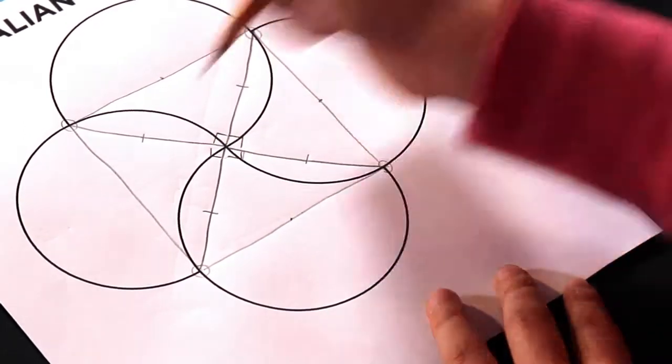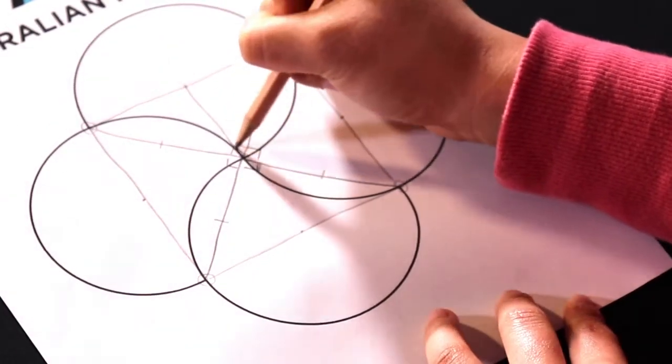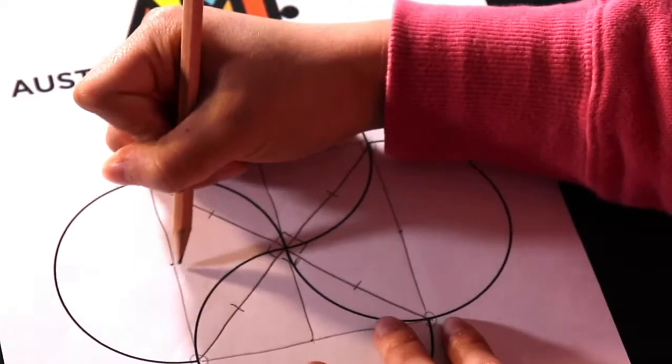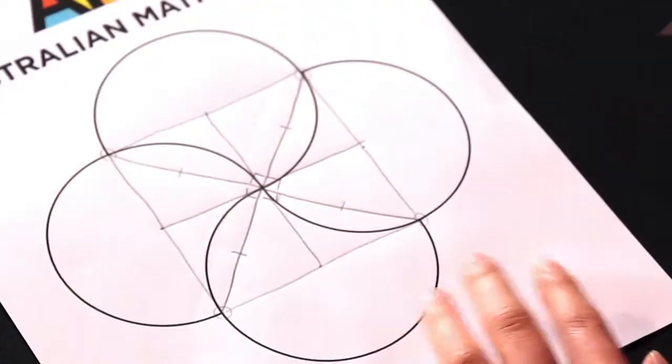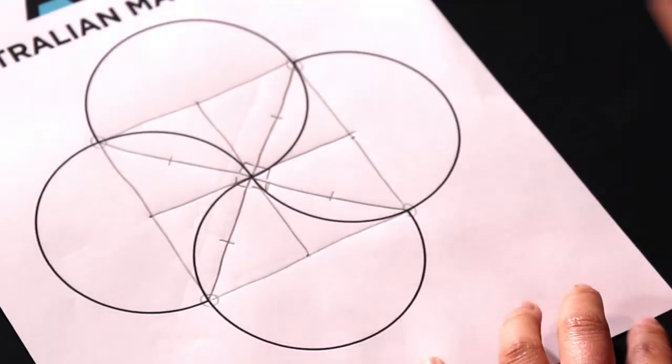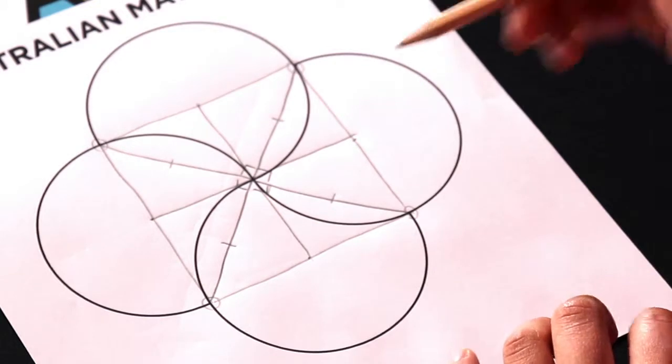So let's add those in as well. Then if we join up these centers, because they're all halfway on the diameters of this circle, we have that we've split this large square into four smaller squares.